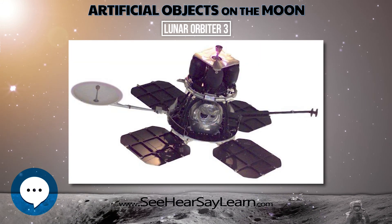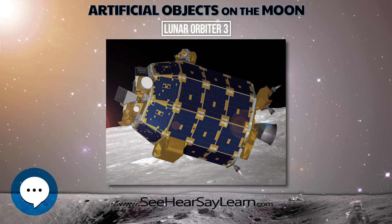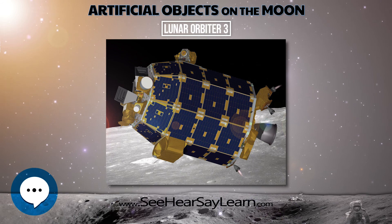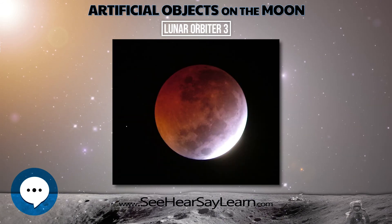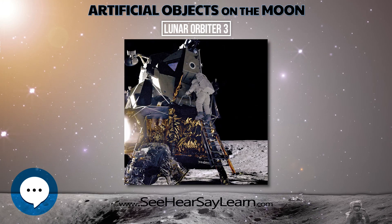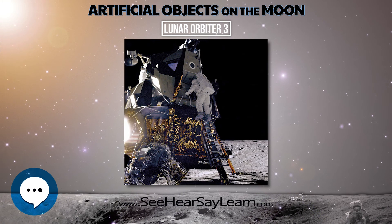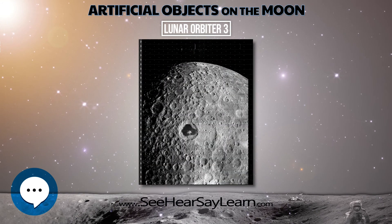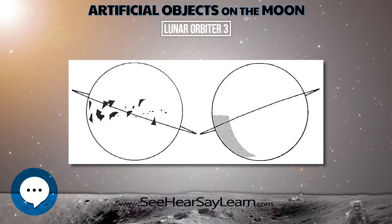It was also equipped to collect selenodetic, radiation intensity, and micrometeoroid impact data. The spacecraft was placed in a cislunar trajectory and injected into an elliptical near-equatorial lunar orbit on February 8 at 21:54 UT. The orbit was 210.2 by 1,801.9 kilometers with an inclination of 20.9 degrees and a period of 3 hours 25 minutes.